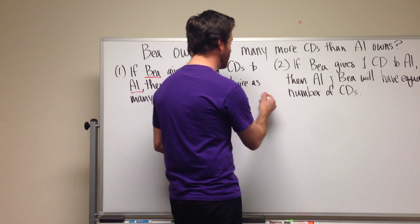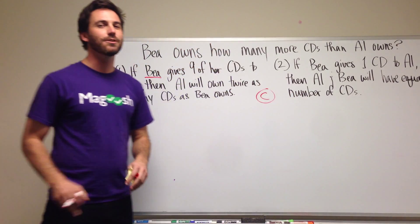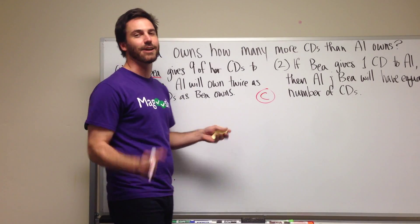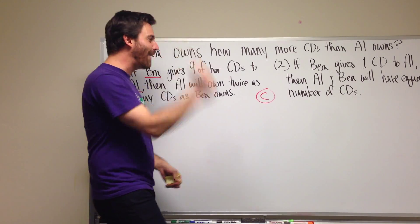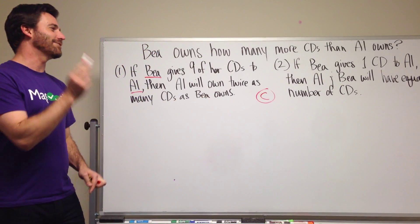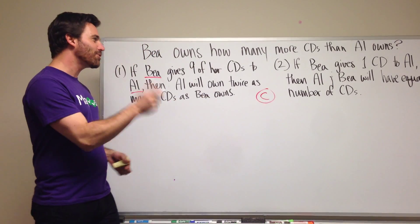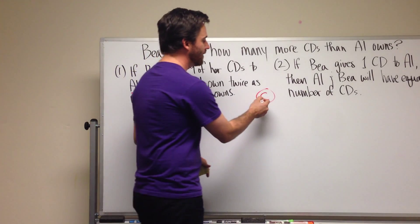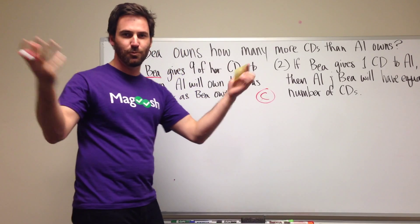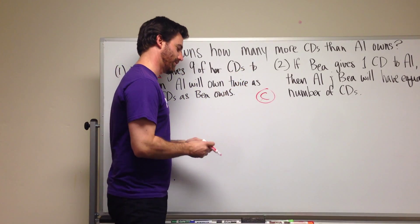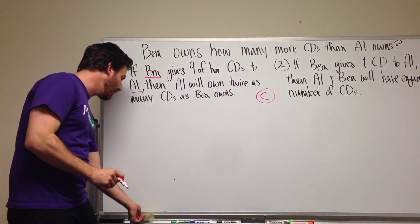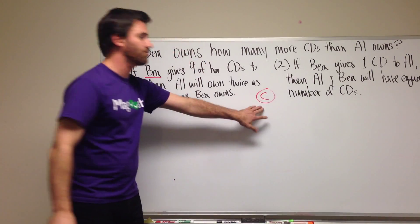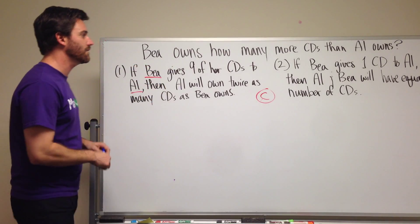So you might just choose answer C without doing any work and move on very quickly to save time. Well, you just fell for one of their traps and they're tricky about it so you have to do at least a little bit of work to make sure that it's actually C. You don't want to just willy-nilly be choosing answer choices. So let's see why this is true and that it's actually not answer choice C but actually the answer is B.